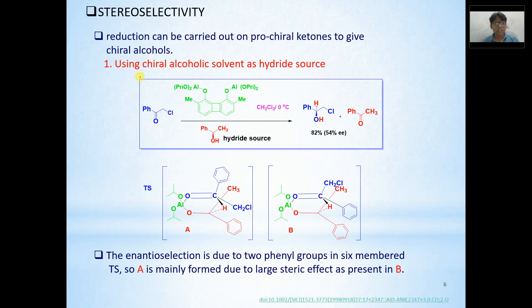Now, we have to discuss its stereoselectivity. Stereoselectivity is found out using prochiral ketones. Prochiral ketones that is ketones having different functional groups upon which when some groups are attacked, we get an optically active compound. Here we have three different methods of generating the stereoselective product. One being the usage of chiral alcoholic solvent as hydride source. This was your hydride source.